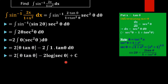Now we convert back to x. Since x = tan θ, we have θ = tan⁻¹(x). For sec²θ: since sec²θ = 1 + tan²θ = 1 + x², we get sec²θ = 1 + x², and therefore sec θ = √(1 + x²), which can be written as (x² + 1)^(1/2).